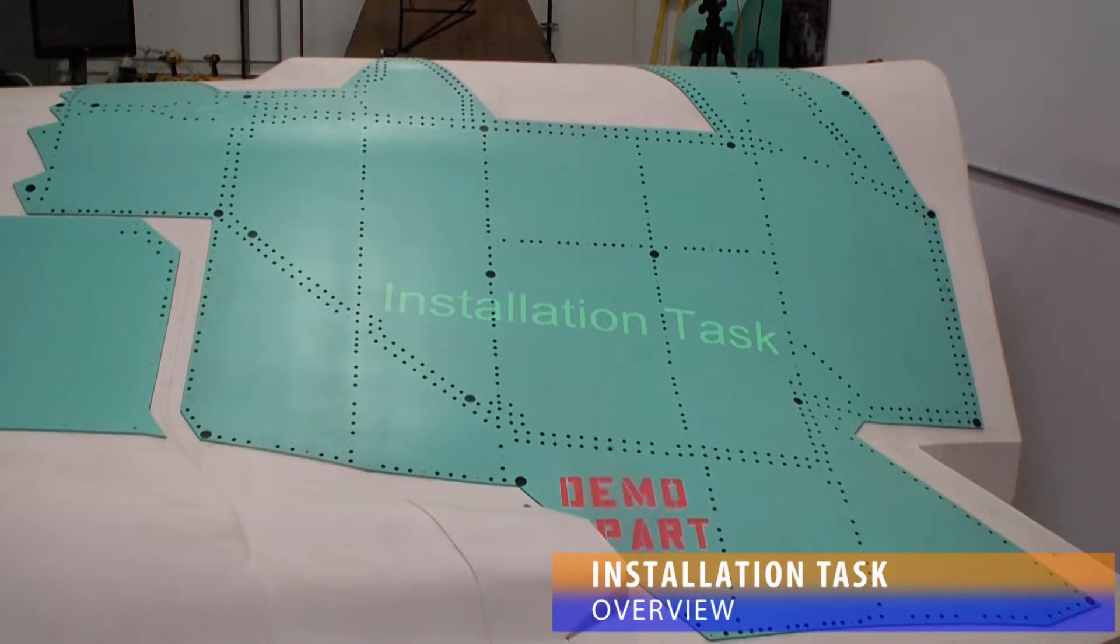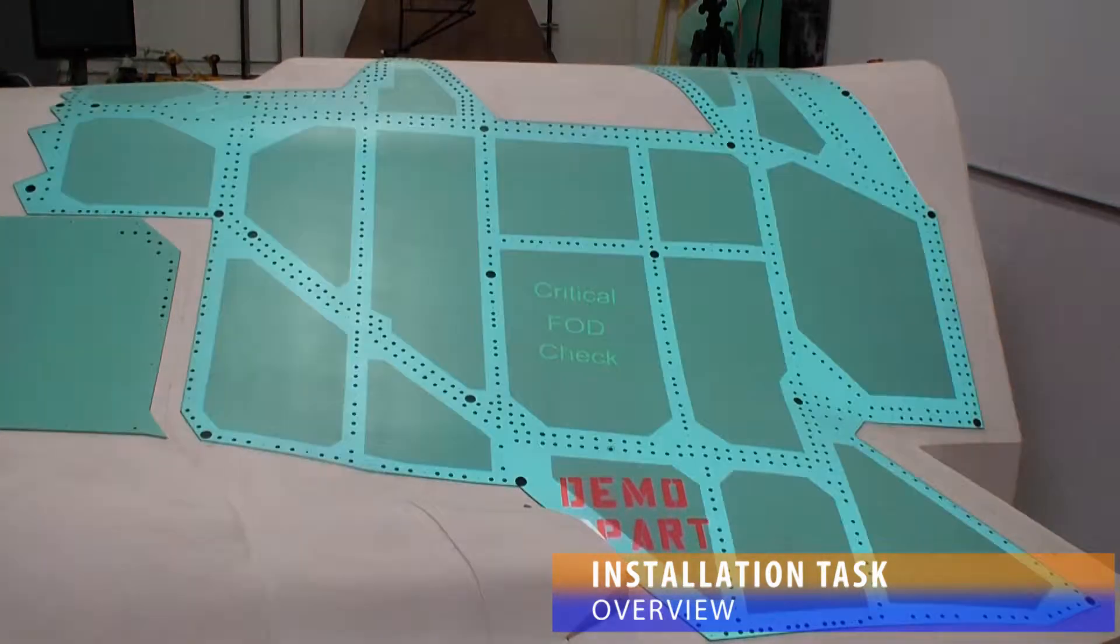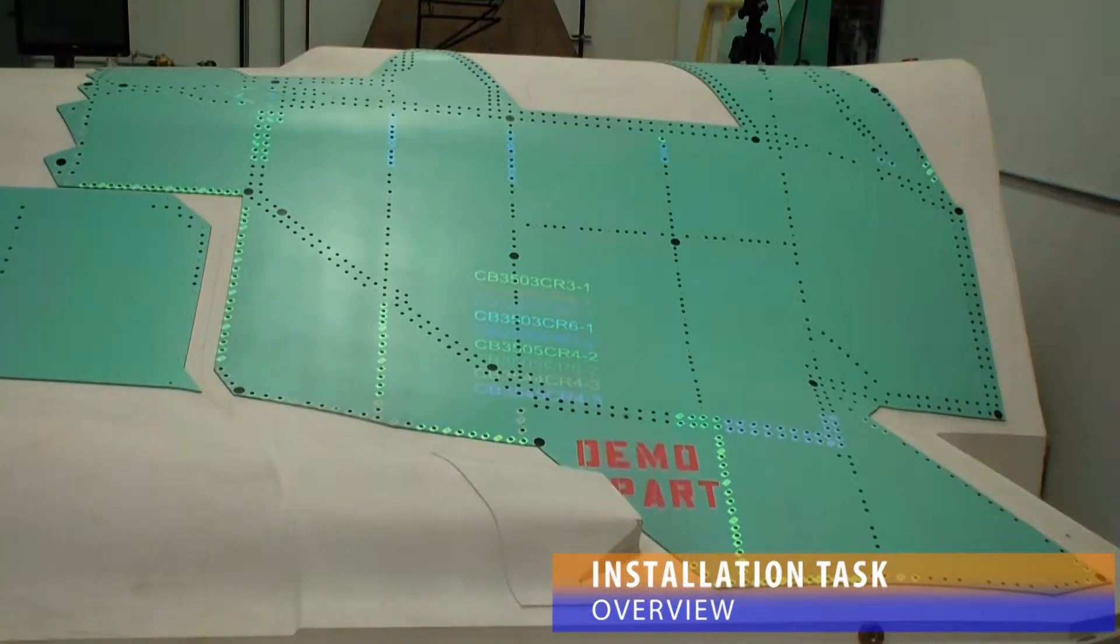The installation task can simply show information or text, as in this FOD check. It can show color-coded labels, like this nut plate installation.